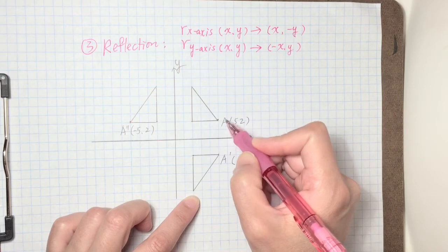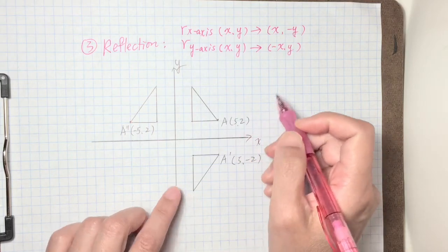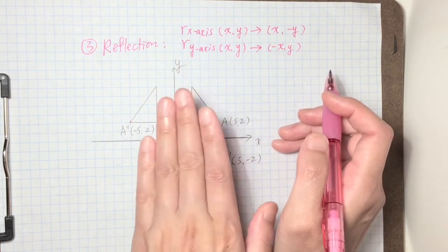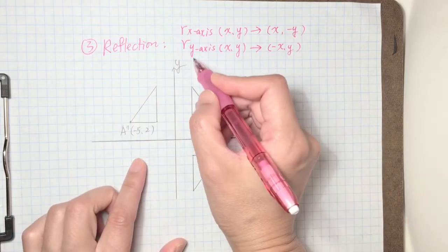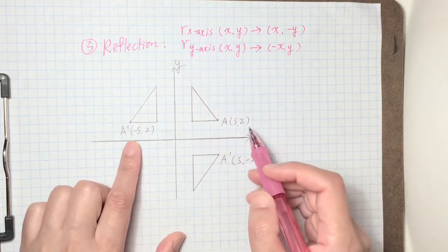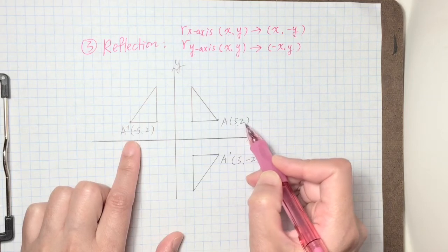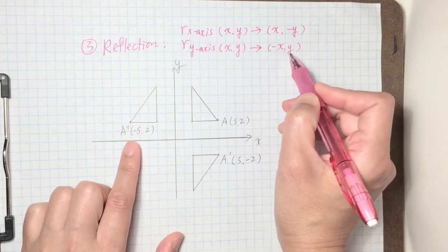If this image reflect this direction with Y axis, then A five, two change into negative X and Y, which the new A prime is negative five and two.